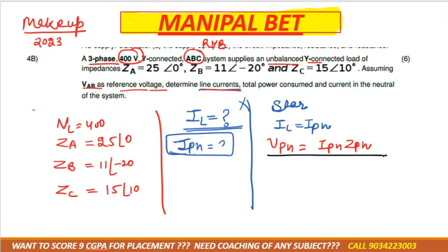We have VL (line voltage), not VpH directly, but we can derive VpH from it. We also have the different impedance values ZpH. So yes, we can calculate the current using this formula.